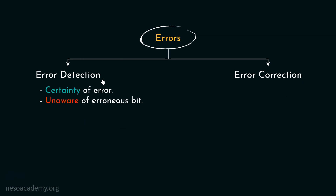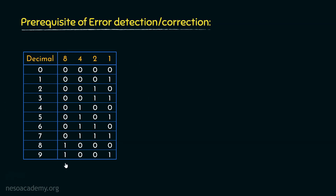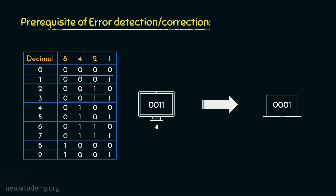Before going straight to the context, let's understand the prerequisite of the codes we will use for error detection or correction. Say we are using BCD or 8421 codes for transmission. Now, for error detection or correction, we can't really use 8421 or BCD — the reason will be revealed in upcoming sessions. Say we have two different machines: a sender and a receiver. The sender selects the pattern 0011, which is a valid BCD, for transmission. When it transmits the data, the receiver receives the data as 0001 — basically the third bit got toggled. However, the receiver can't detect the error because 0001 is also a valid BCD code. So if our data gets changed to another valid data during transmission, the machines cannot detect the errors.